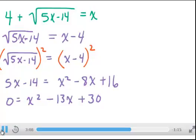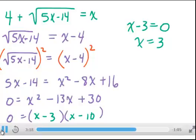With 0 on the left hand side, this one will factor nicely to x minus 3, x minus 10. So x minus 3 is 0, so x equals 3. That's one possible solution. And x minus 10 is 0, x equals 10. 10 is another possible solution.